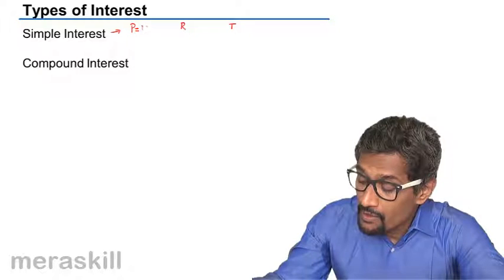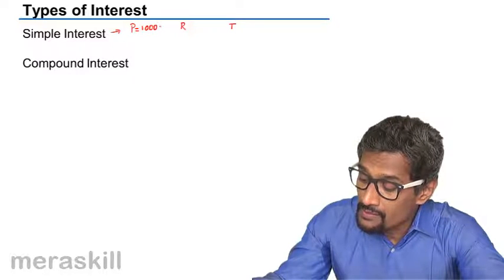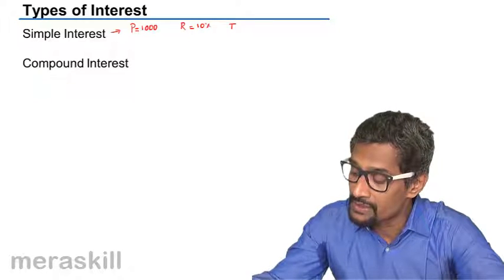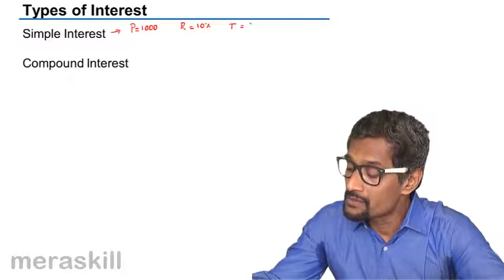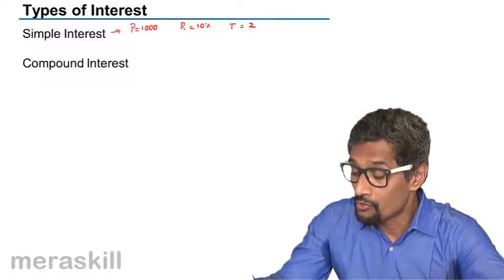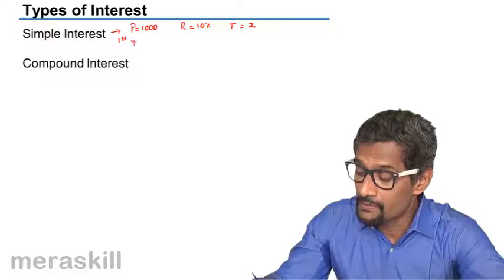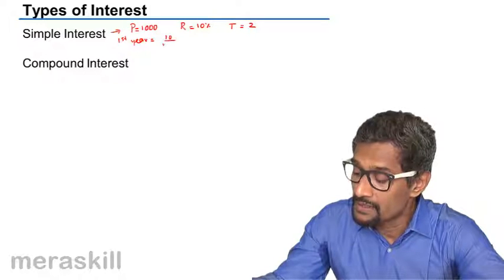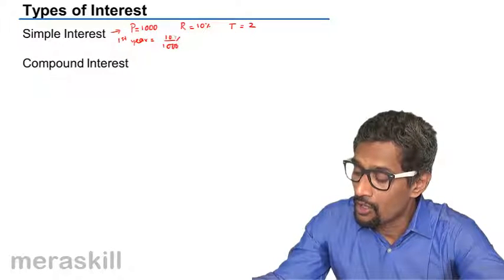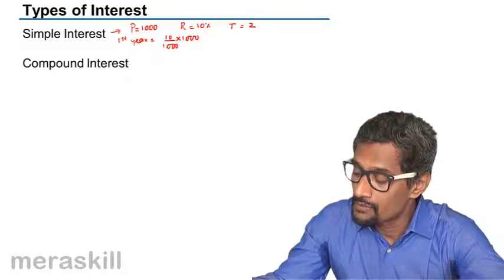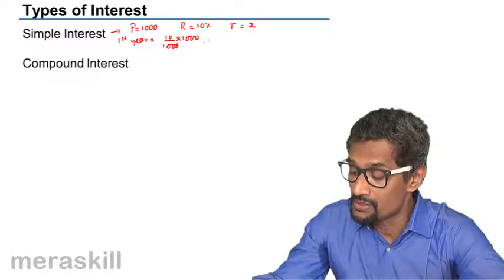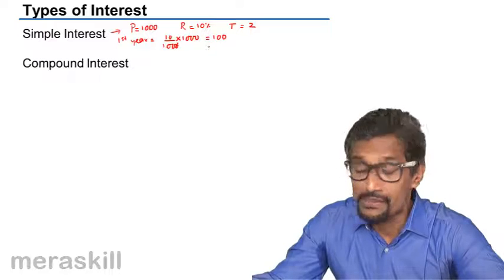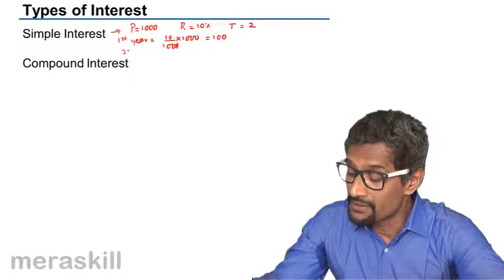Say for example, you have 1000 rupees loan and the rate of interest is 10% and the period is two years. So for the first year, the interest is going to be 10% of 1000 into one, which is going to be 100 rupees.